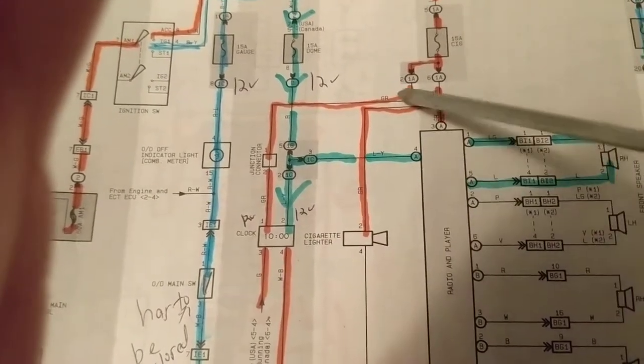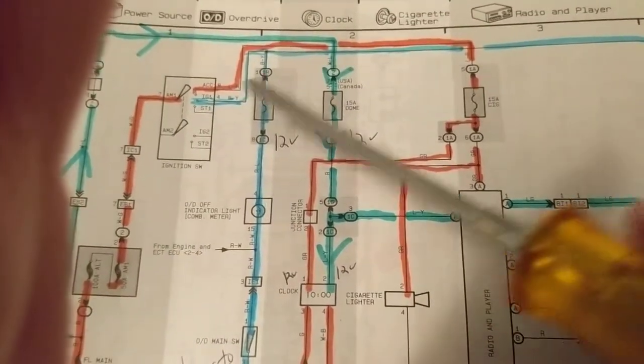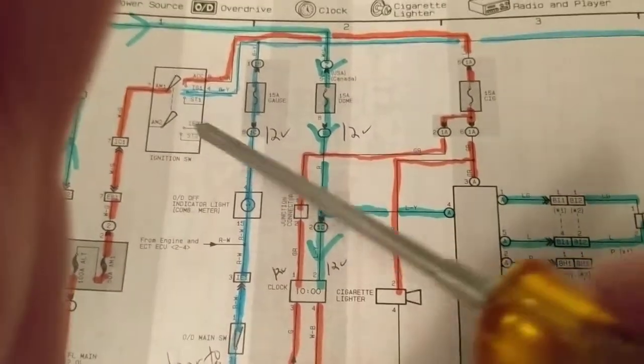We're not getting 12 volts over here through this junction connector. Can it be that this is not good? And that's how we have no clock display?